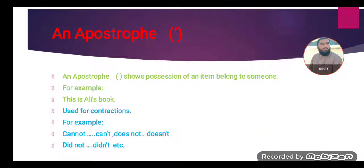So another punctuation mark is an apostrophe. An apostrophe shows possession or ownership of an item belonging to someone else. For instance, this is Ali's book. So the item, book, belongs to Ali, so that's why here we are using apostrophe. This is Ali's book.